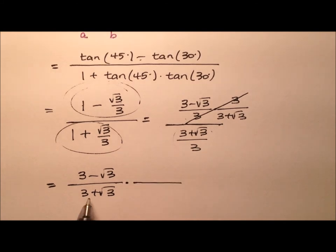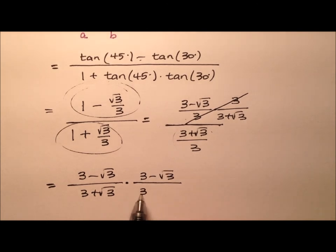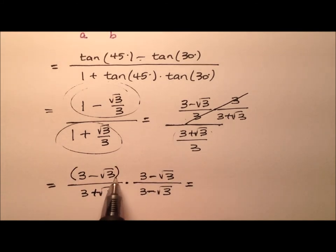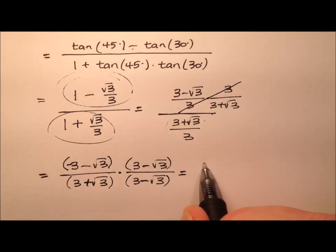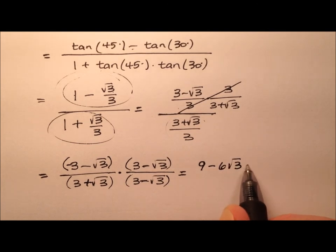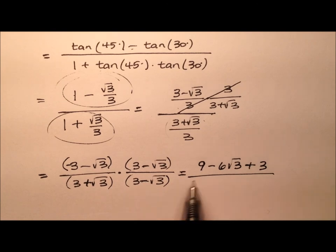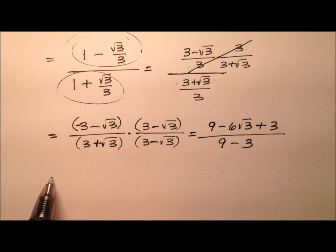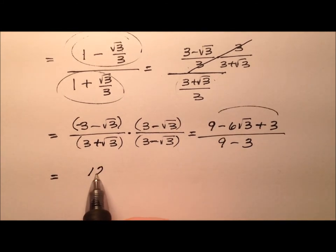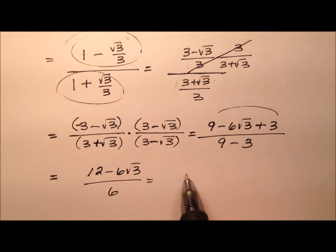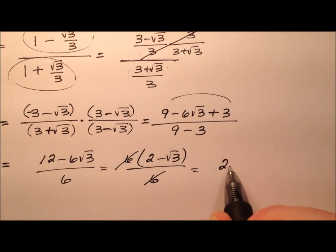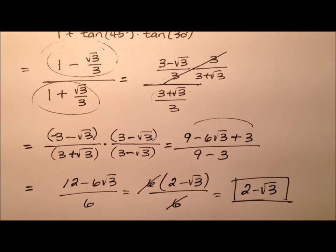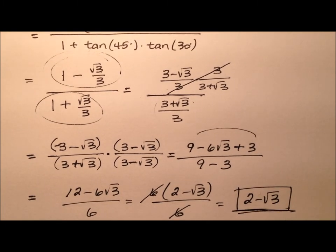Let's rationalize this denominator by multiplying top and bottom by the conjugate — changing the plus to a minus. On top we have a perfect square: 9 minus 6 radical 3 plus 3. The conjugate multiplication on the bottom gives 9 minus 3, which is 6. On top that simplifies to 12 minus 6 radical 3. Factoring out 6 cancels with the denominator, and once again we see it will be 2 minus the square root of 3 — same as the first method.